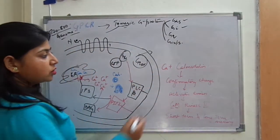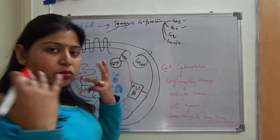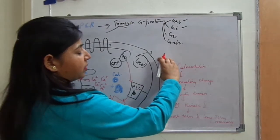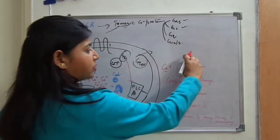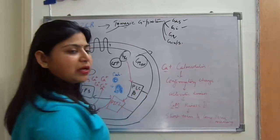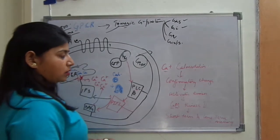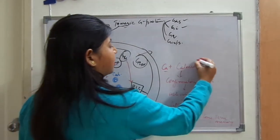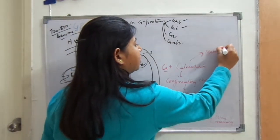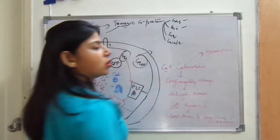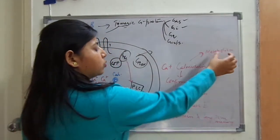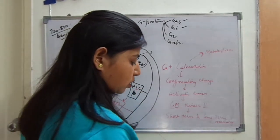In old age, if calcium is less, memory is also weakened. Because if calcium is less, it will not bind with calmodulin, and with less calmodulin activation, short-term and long-term memory will be weakened. Also, calcium plus calmodulin is responsible for metabolism — in old age, metabolism is also weakened because the amount of calcium is lowered in our body.